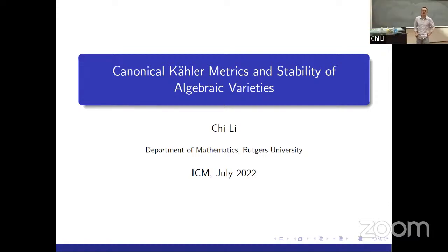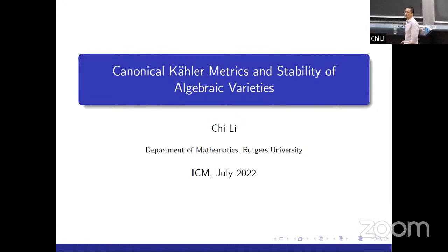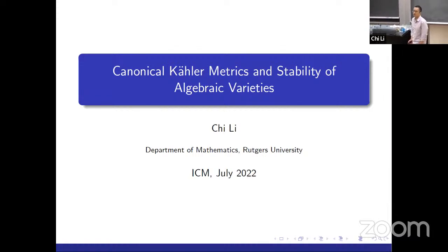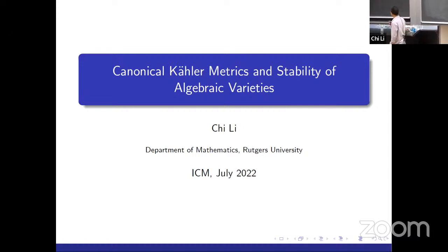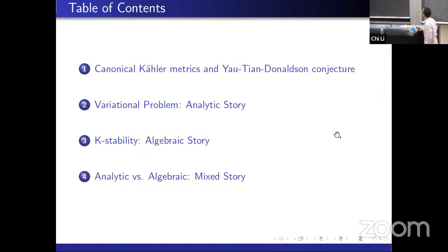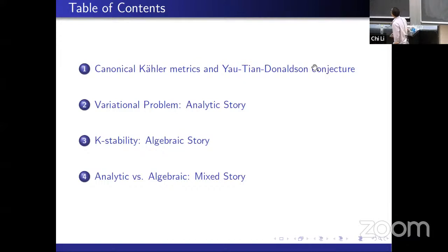Thanks for the introduction. Thanks to everyone for being here, either online or in person here at Copenhagen. I would like to take this opportunity to thank my collaborators, without whom I would not be able to come here. Today I will survey some recent developments in the study of canonical Kähler metrics and their relation with the stability of algebraic varieties. This talk has four parts: first I will introduce the problem, then talk about an analytical story, then move on to the algebraic story, and finally discuss how they interact with each other.